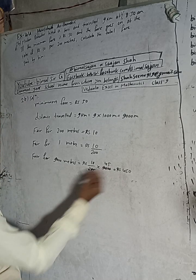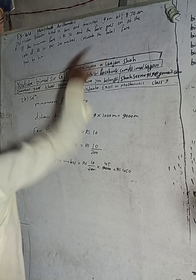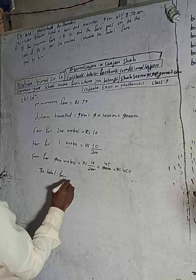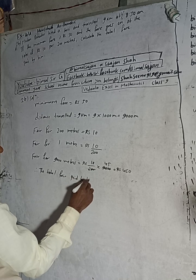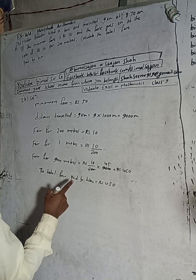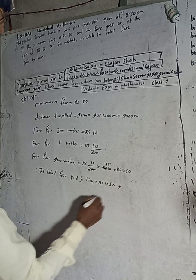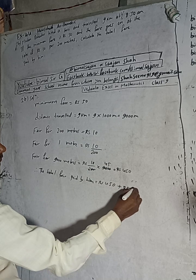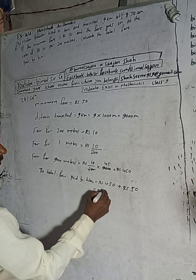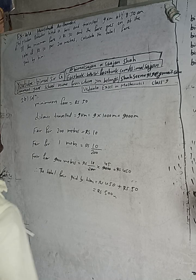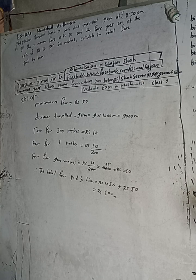Therefore, the total fare paid by him equals the fare for 9 km (i.e., 9,000 meters) plus the minimum charge. The minimum fare is Rs 50. So total fare equals Rs 450 plus Rs 50, which equals Rs 500.